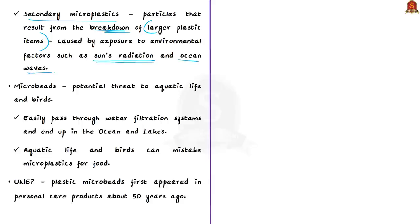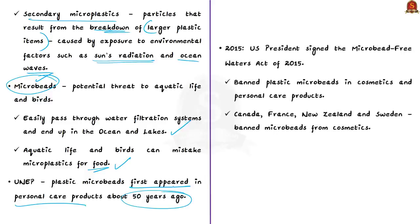This breakdown is caused by exposure to environmental factors, mainly the sun's radiation and ocean waves. Microplastics are harmful to the environment — especially microbeads, which easily pass through water filtration systems and end up in oceans and lakes. Aquatic life and birds mistake these microplastics for food and consume them, eventually leading to their death. According to the UN Environment Programme, plastic microbeads first appeared in personal care products about 50 years ago. In 2015, the USA enacted the Microbead-Free Waters Act, banning plastic microbeads in cosmetics. Several other countries — Canada, France, New Zealand, and Sweden — have also banned microbeads.